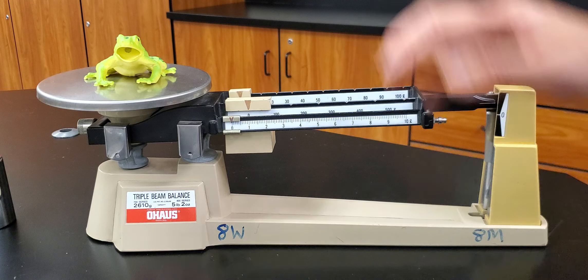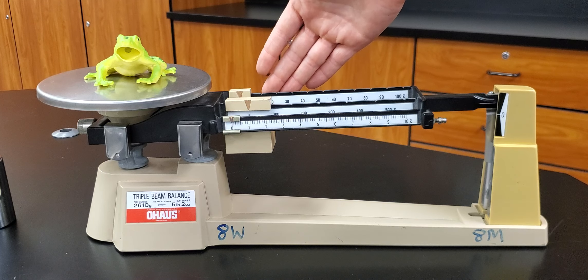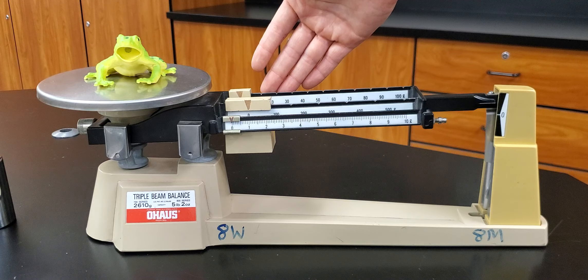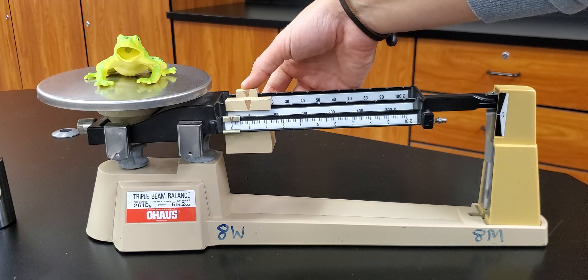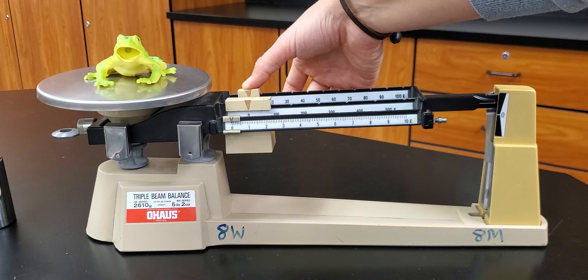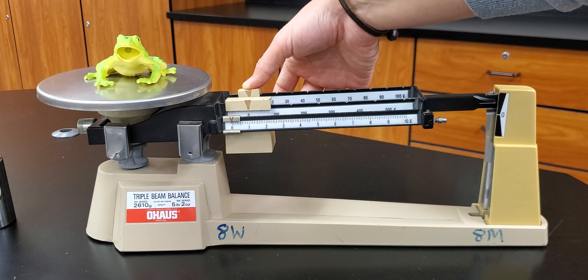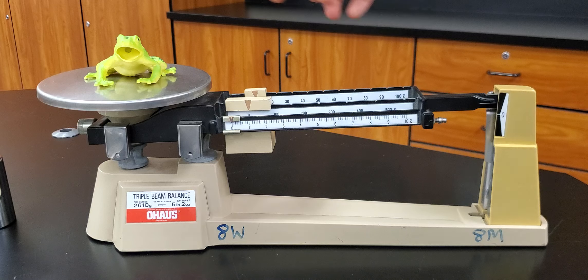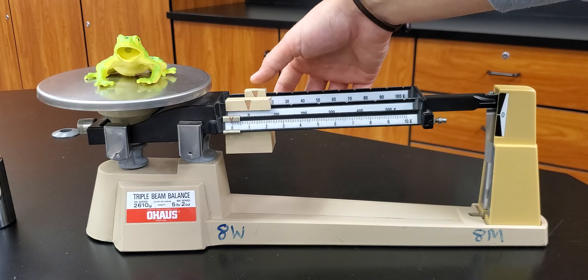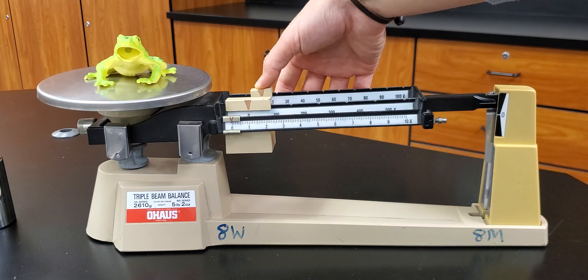Now it's less than 100 grams so I need to move to the back beam, my tens gram or my tens place spot. So I'm gonna move my slider down and again we've got grooves back here so I'm gonna make sure it clicks into the 10 gram groove. Alright, and my arm is still up so that means that my frog has a mass of more than 10 grams. So I'm gonna keep going.